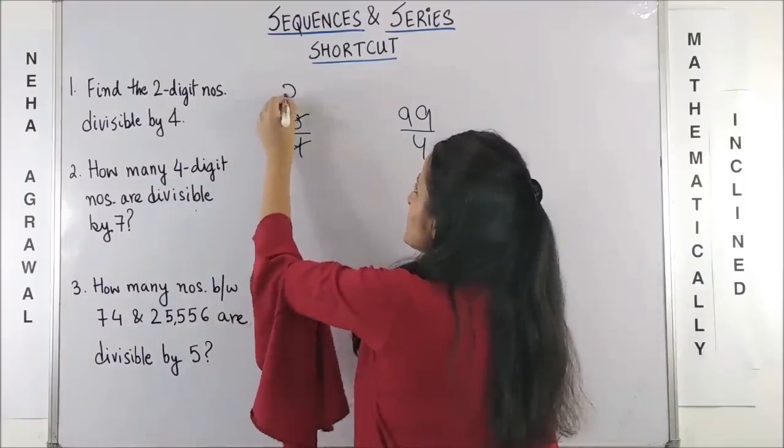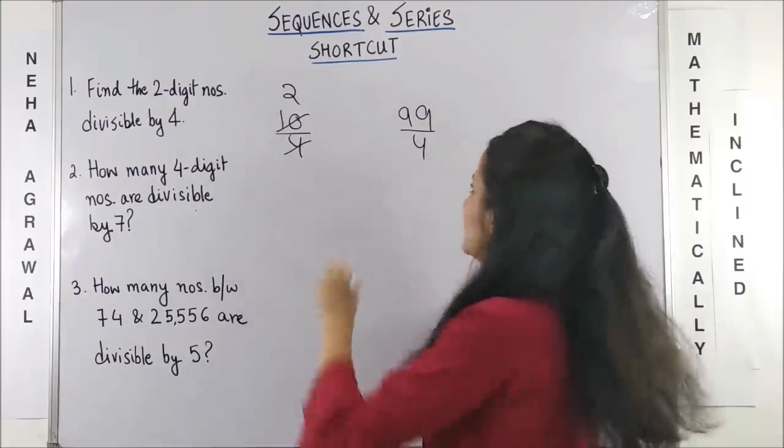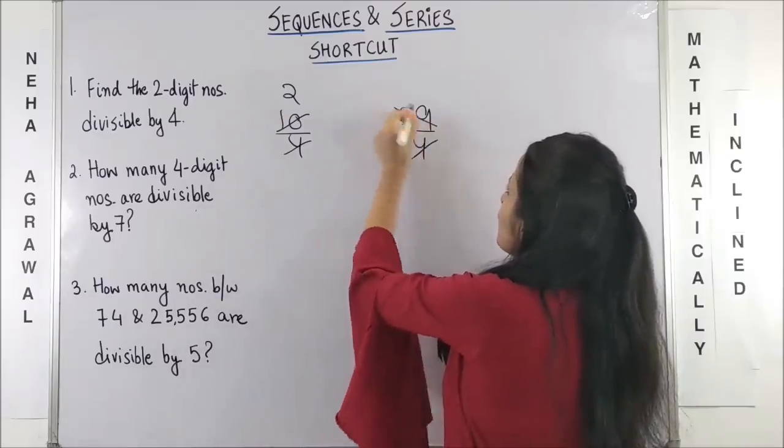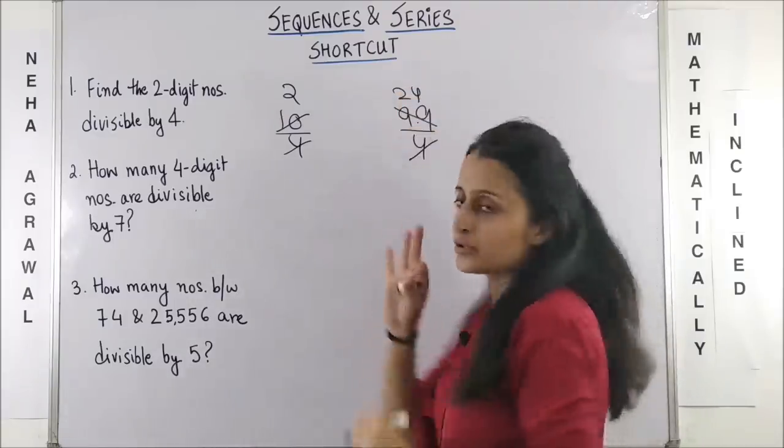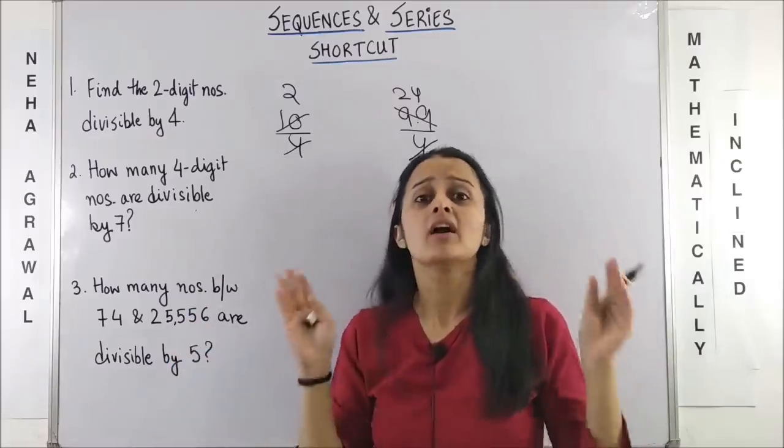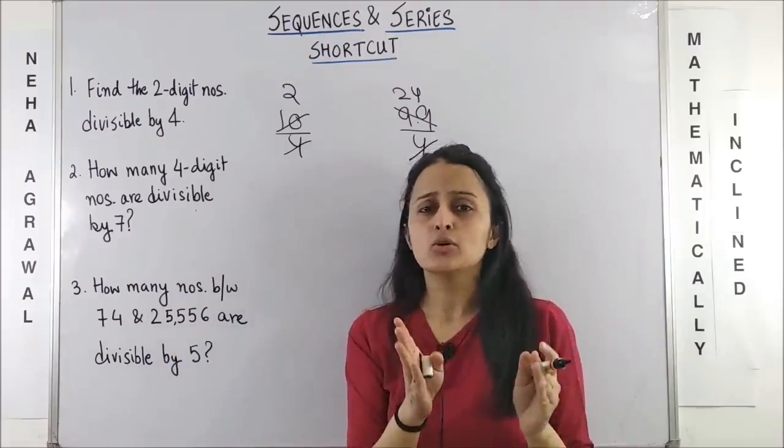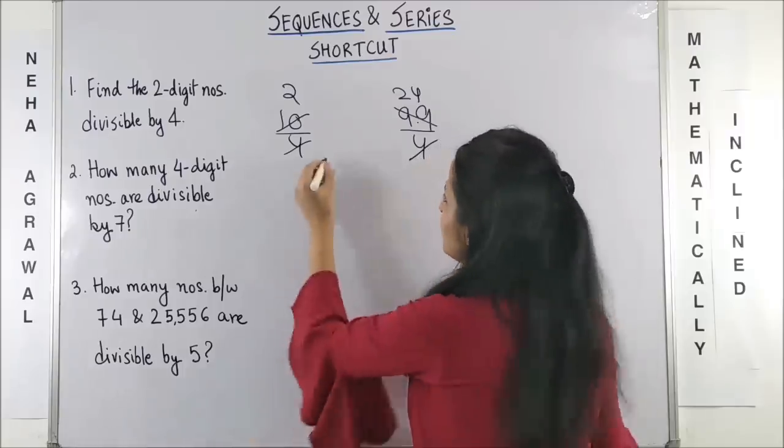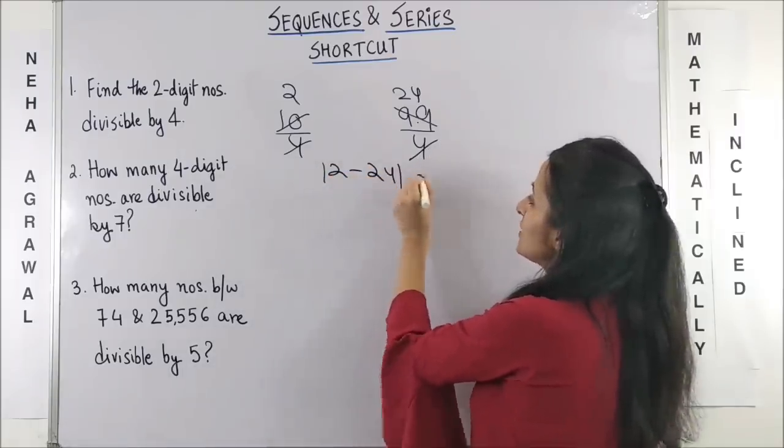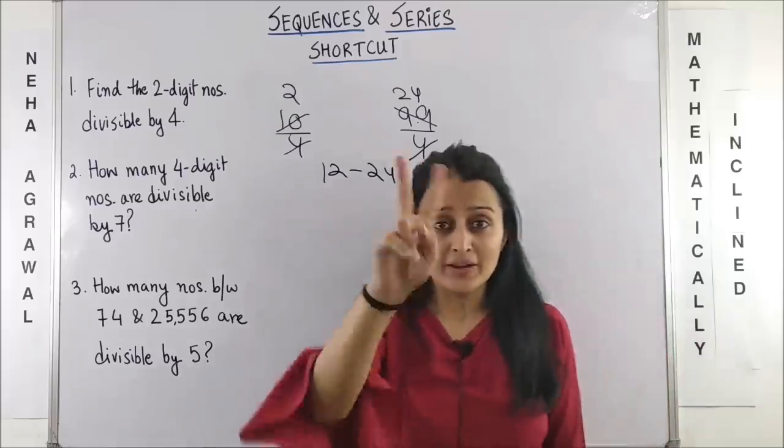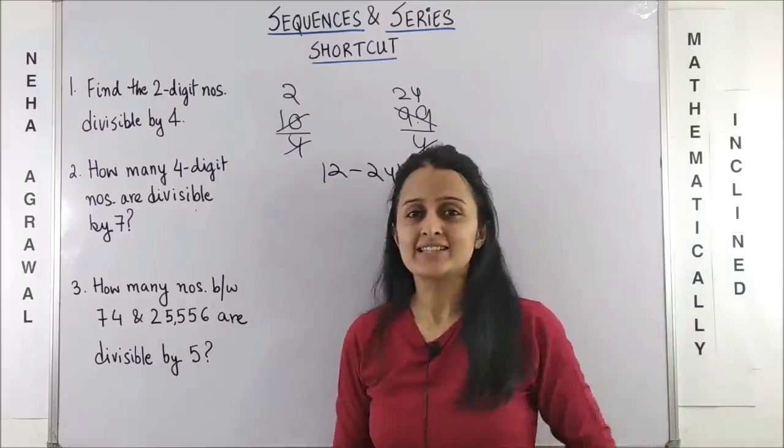So this gives us 4, 2s are 8 and 2 remainder. Forget about it. Here, it gives us 4, 2s are 8 and here 4, 4s are 16. 3 is the remainder. Forget about it. I am only interested in the quotient, not in the remainder. So this will be mod of or absolute value of 2 minus 24 and bingo! So 22 is the desired answer.